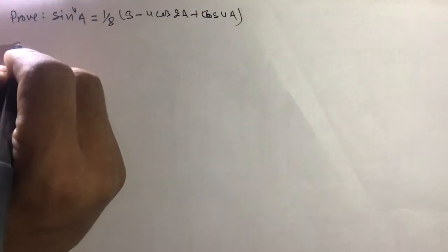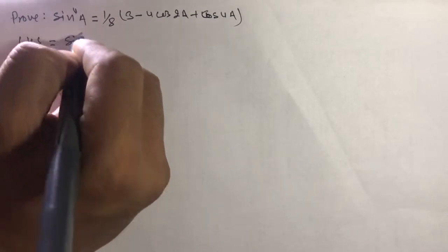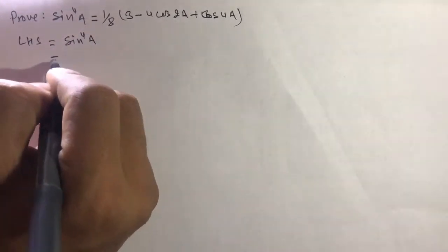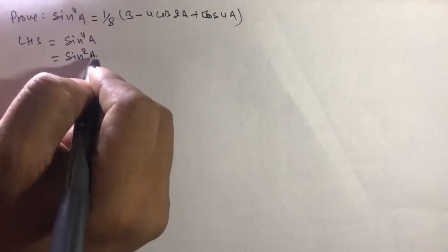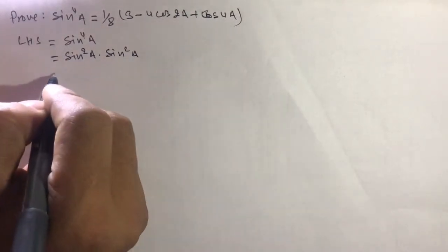Okay. Let's start from LHS. LHS equals sin 4a. We can write sin 4a as sin²a times sin²a.